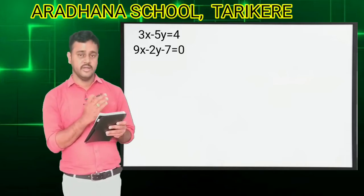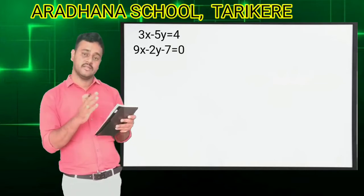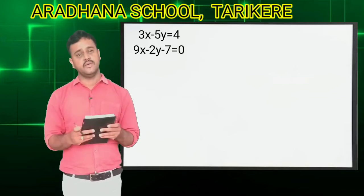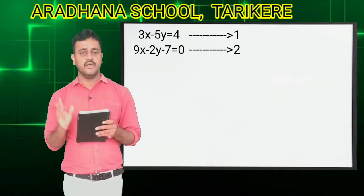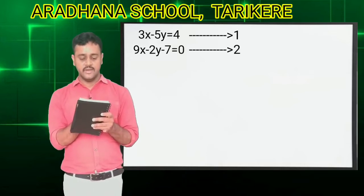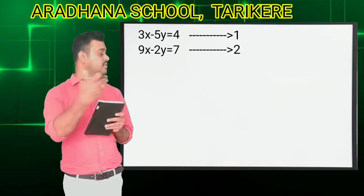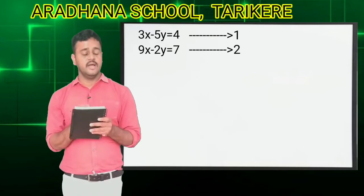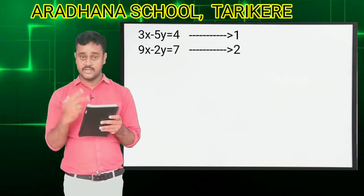Look at this problem carefully. Here, the coefficients of x are different, and the coefficients of y are also different. So we have to eliminate any one of the variables because the coefficients are not the same. Look at the second equation — it has minus 7, so I will shift the minus 7 to the right side, making it equal to 7. I will consider the first as equation 1 and the second as equation 2.